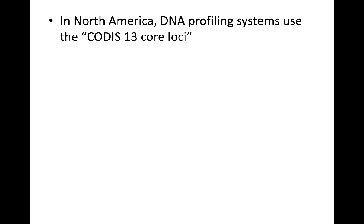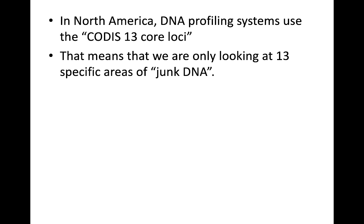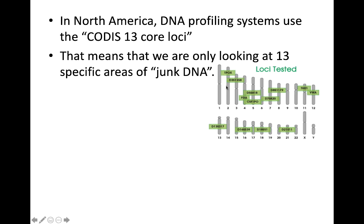In North America, the DNA profiling system we use is called CODIS 13 core loci. The reason is that we're only looking at 13 very specific regions of junk DNA for those short tandem repeats. There's a spot on chromosome two, another on chromosome three, one on four, two spots on five, and spots on seven, eight, eleven, twelve, thirteen, sixteen, eighteen, and twenty-one.